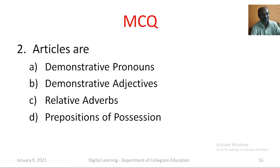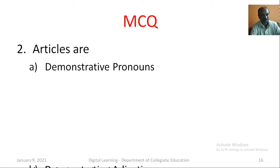Question number two: articles are dash. Option A: demonstrative pronouns. Option B: demonstrative adjectives. Option C: relative adverbs. Option D: prepositions of possession. Yes, you are correct. The correct answer is demonstrative adjectives.